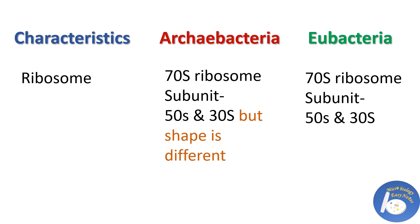Ribosomes: in Archaebacteria, 70S ribosomes are present, where 50S is the larger subunit and 30S is the smaller subunit. In Eubacteria, 70S ribosomes are also present, but the shape of the 50S and 30S ribosomal subunits of Archaebacteria are different from those of Eubacterial ribosome subunits.